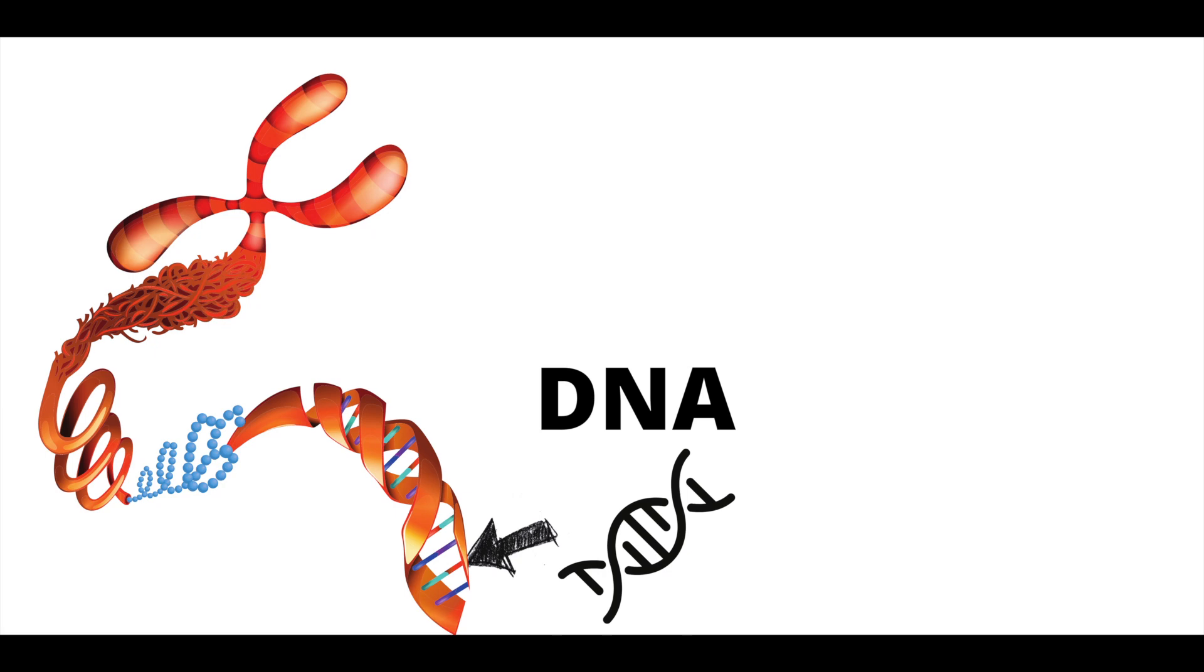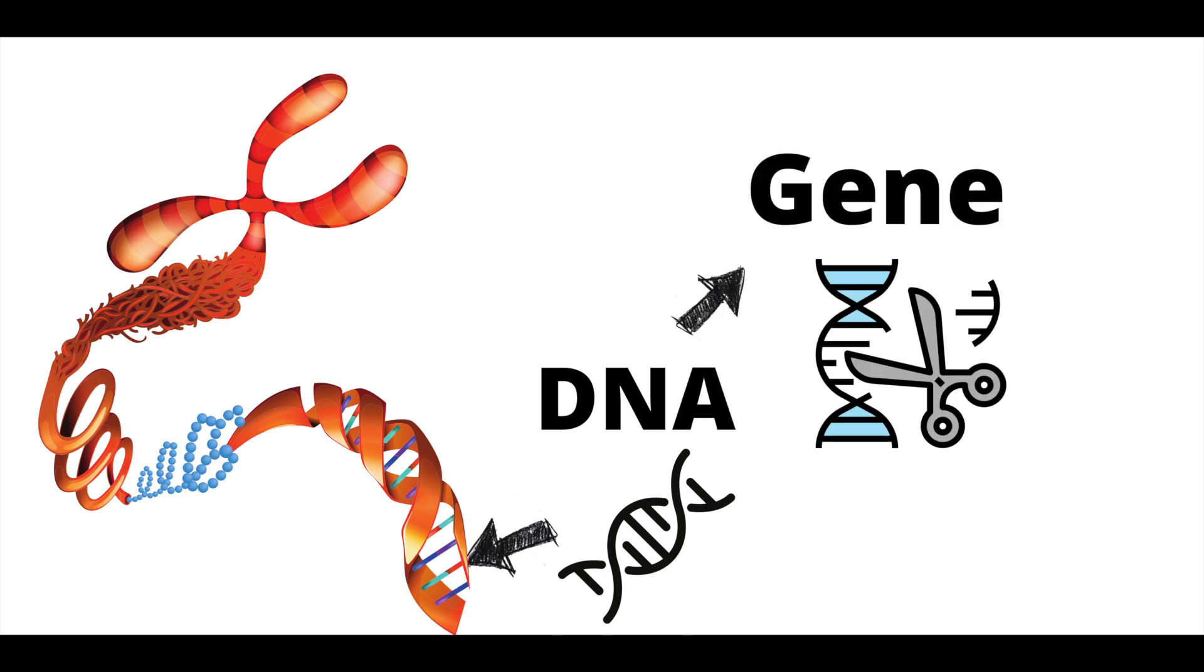Within each chromosome, you have hundreds to thousands of DNA strands. A snippet of DNA sequences are genes. A gene is a sequence of DNA or RNA that codes for a molecule. In other words, a sequence of DNA makes up a gene, and multiple genes make up a chromosome.